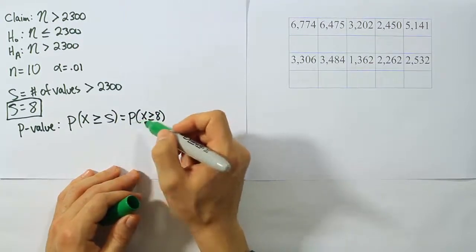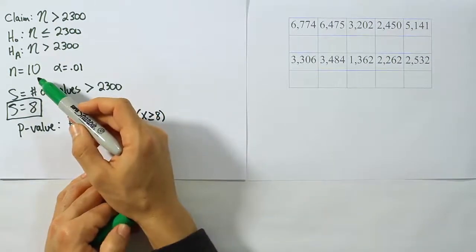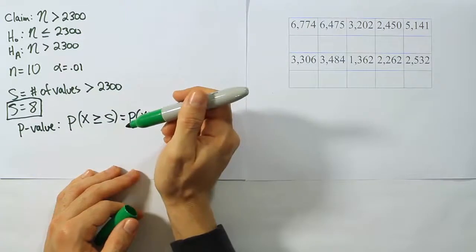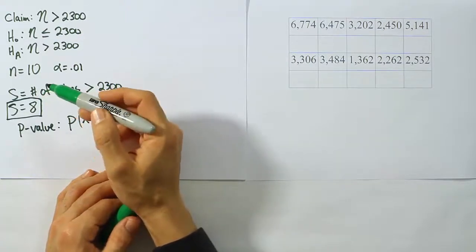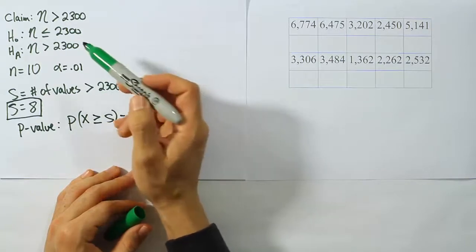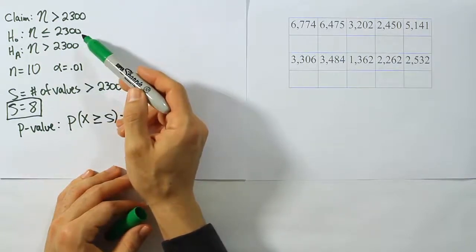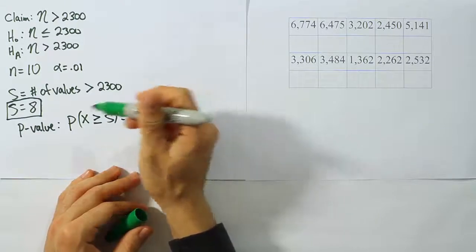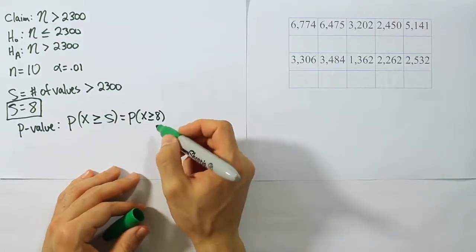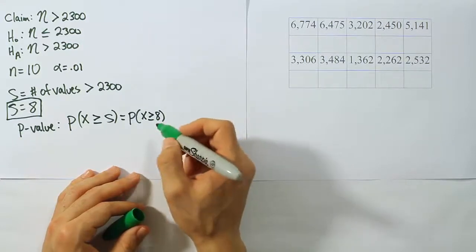In our case, this is going to be the probability that X is greater than or equal to eight. Remember, X is a binomial random variable that has n equals 10 as its number of trials. The probability is 0.5. In other words, because we're saying it's a 50% chance that a value will be greater than 2300 if the median really was equal to 2300.